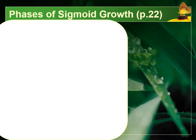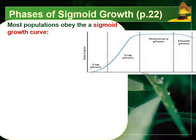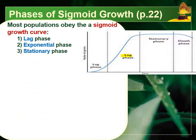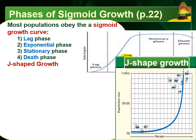Once we start collecting data on a population over different periods of time and graph it, typically we find the population goes through what we call a sigmoid growth pattern. This sigmoid pattern has four distinct phases: the lag phase, the exponential phase (also called the log phase), the stationary phase, and the death phase. The first two phases — the lag and log phase — are sometimes called the J growth phase because they create a J shape when graphed.